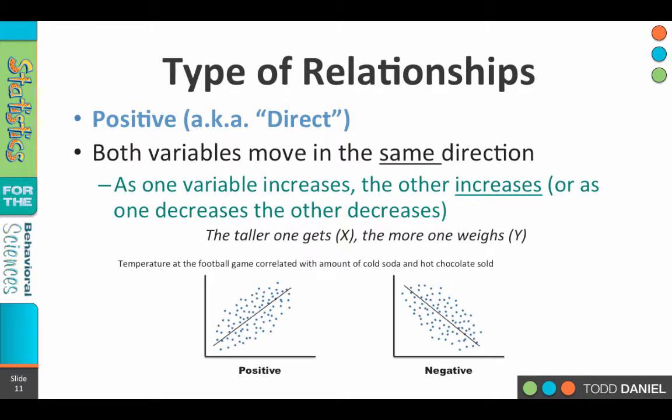Or as we consider the temperature at the football game, as the temperature goes up, the amount of cold soda sold increases, and the amount of hot chocolate sold decreases. So because temperature and the amount of cold soda sold go together, they move together, we would say they are positively correlated.